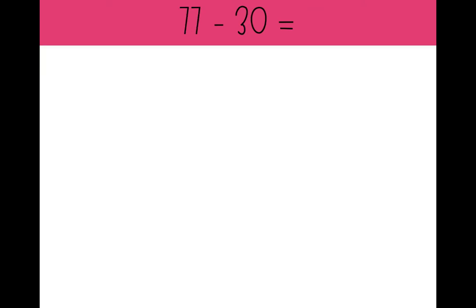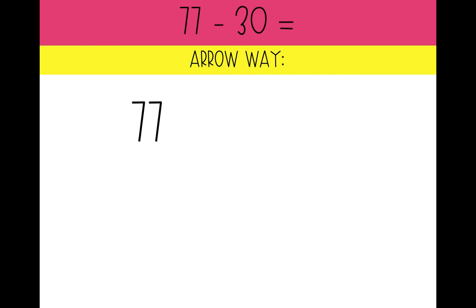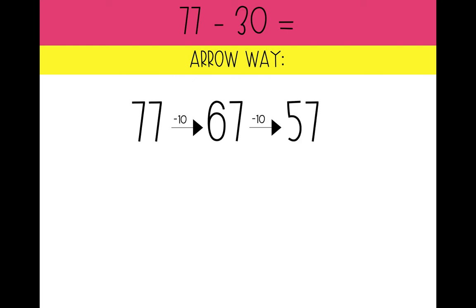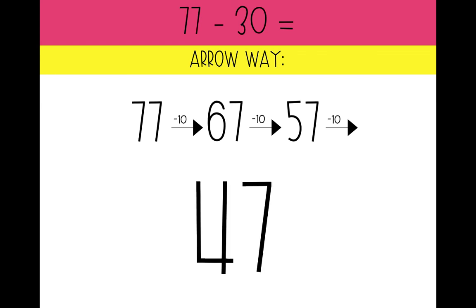Let's try one more together: 77 minus 30, using our arrow way. What number do we write down first? 77. How many tens are we taking away from 77? We're taking away three tens because three tens is 30. 77 minus 10 equals 67. 67 minus 10 is 57. And 57 minus 10 equals 47. We started with 77, took away one, two, three tens, and ended with 47. So 77 minus 30 equals 47.